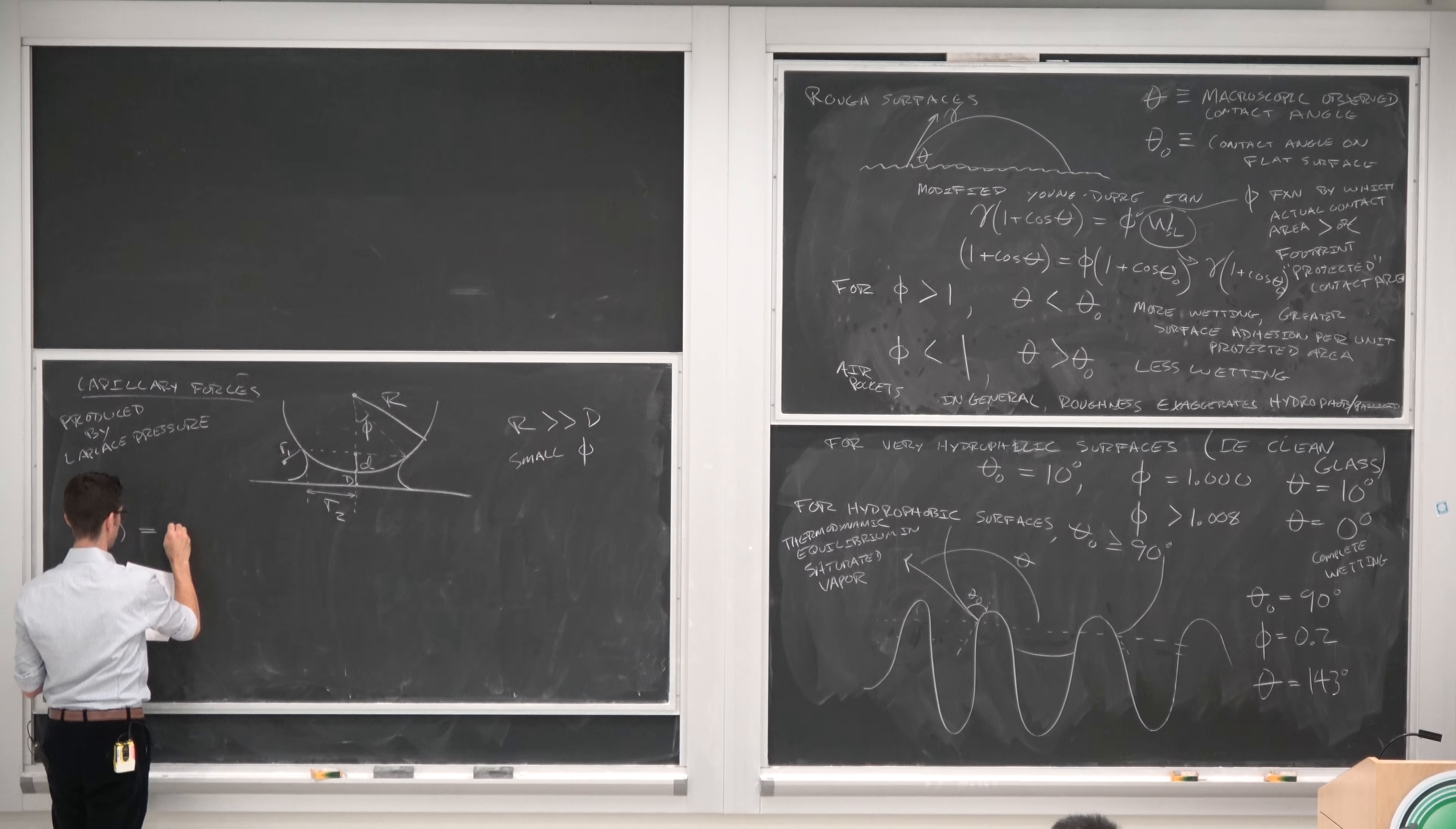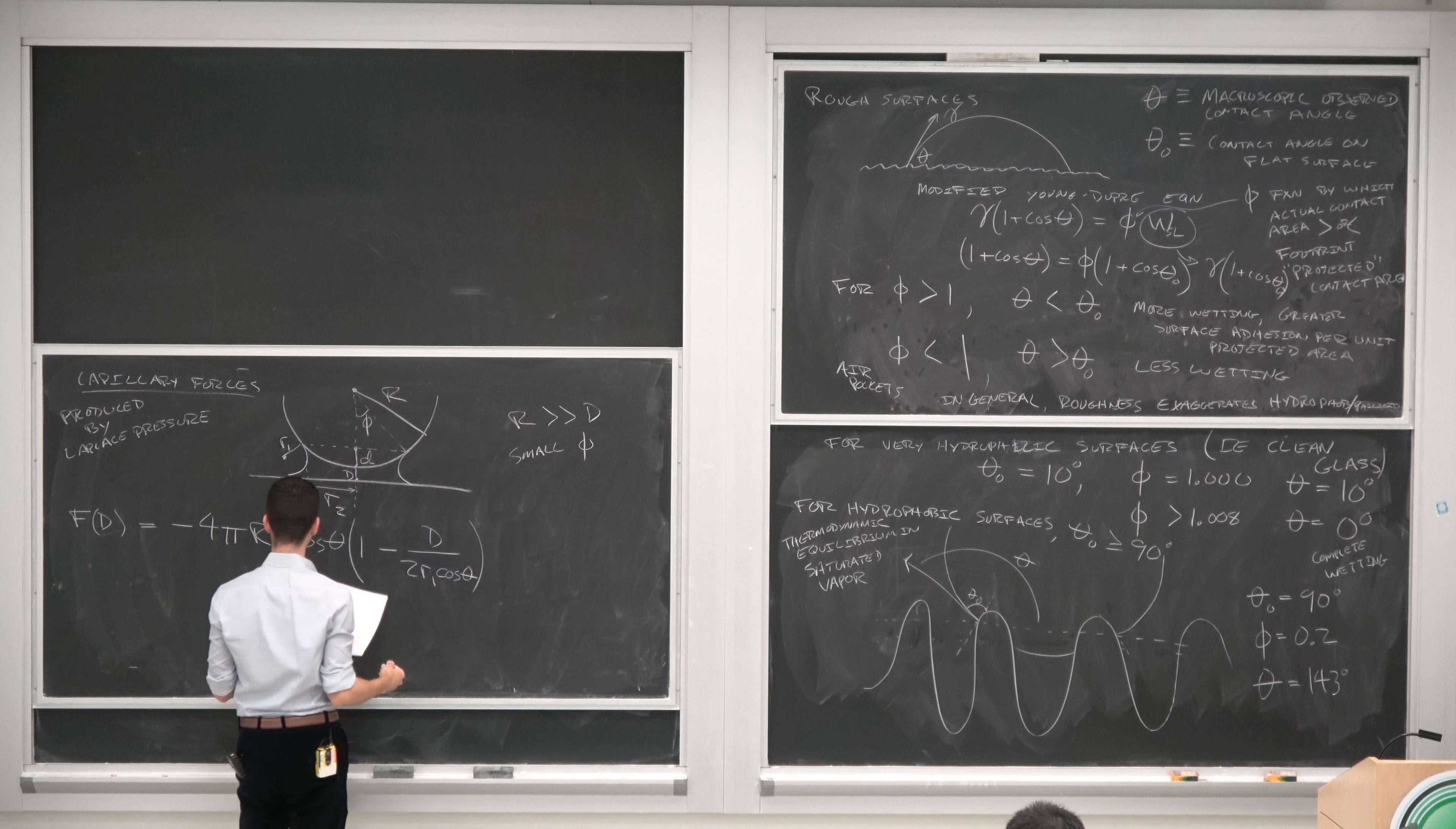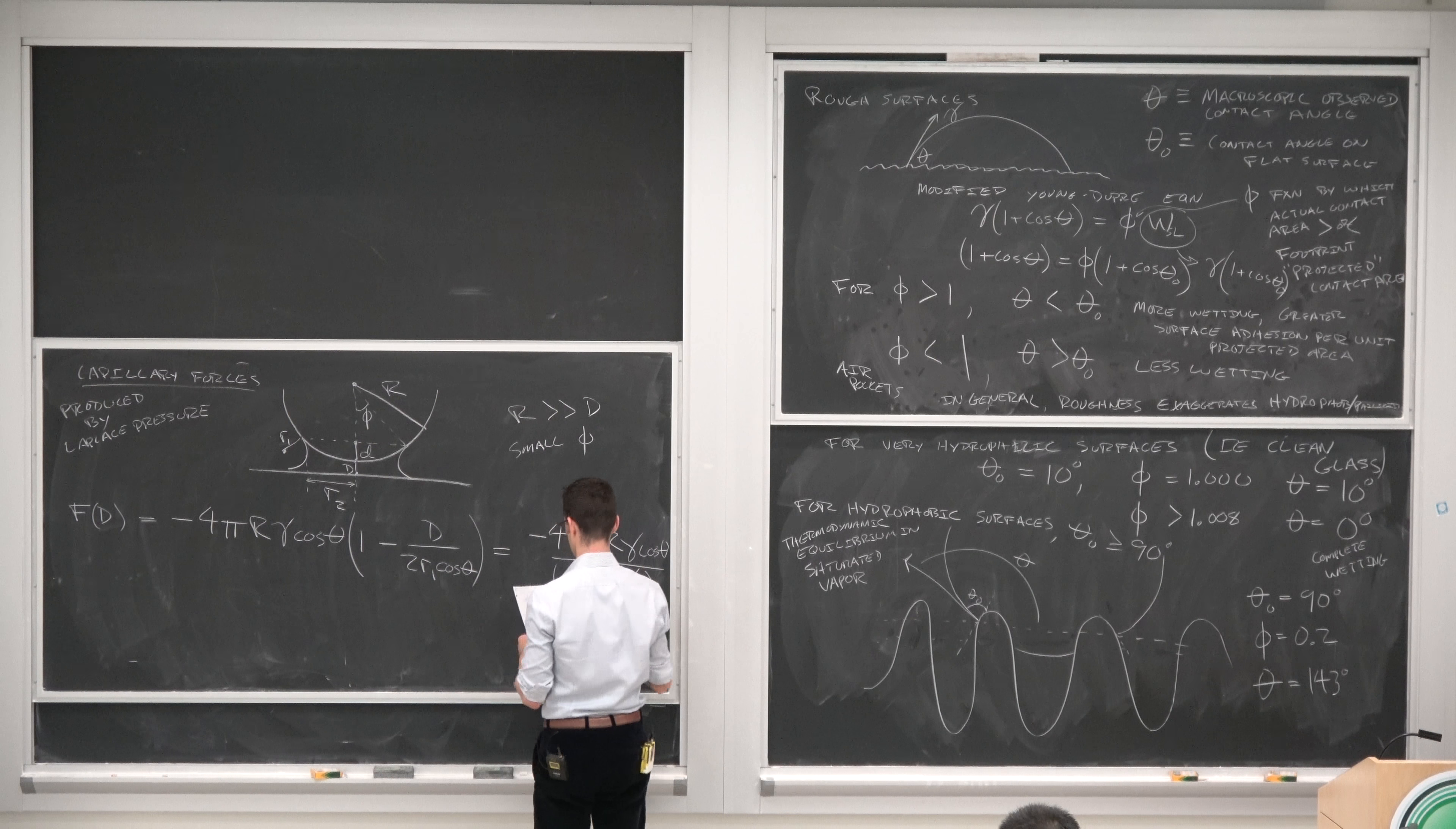So the force as a function of distance is minus 4 pi R times the surface tension cosine theta times 1 minus D over 2 R1 cosine theta. And using Israelachvili's simplifications, the final result is minus 4 pi R gamma cosine theta over 1 plus big D over little d.